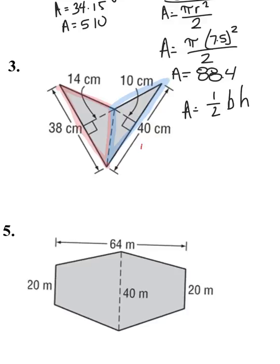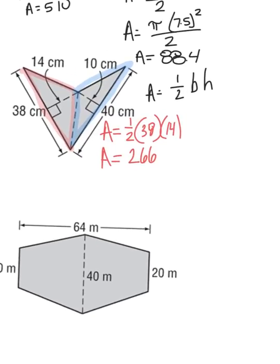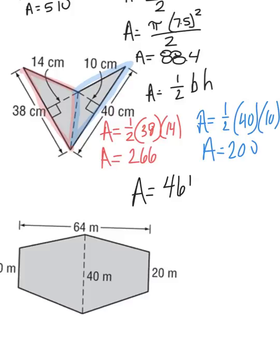So the red one. Area equals one half. Base is 38. Height is 14. Area of the red one is 266 centimeters squared, but we'll add that at the end. The blue one. Area equals one half base times height. We get area is 200. When I add these together, the area of the whole shape is 466 centimeters squared.